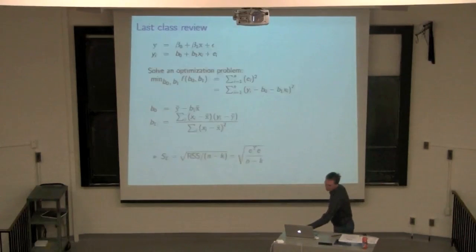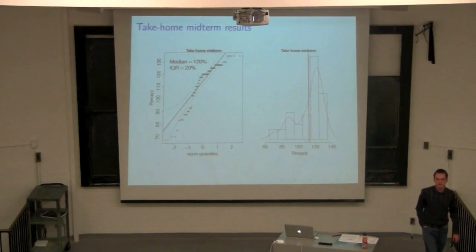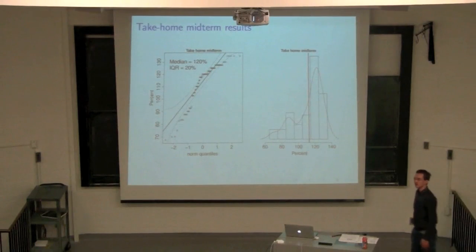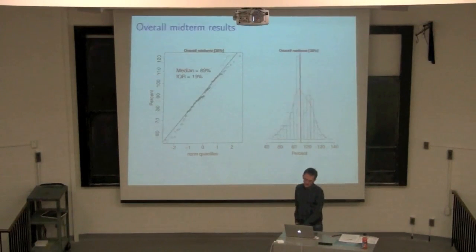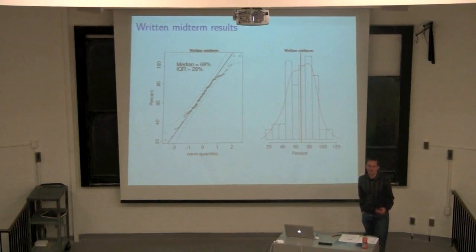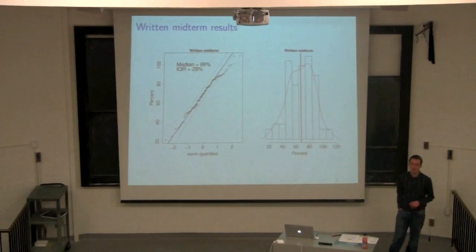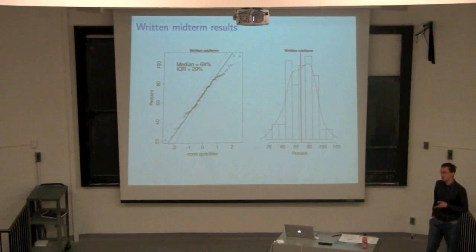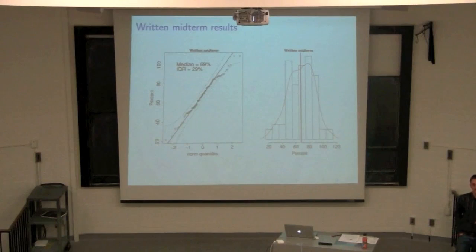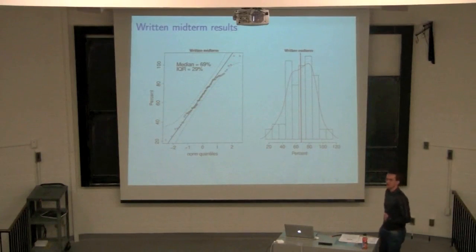On the take-home — those grades were phenomenal. Everyone answered the extra questions, and the average grade is 120%. Most people scored between 100 and 140%. I was really happy with the level of effort. If your written grade is very different from your take-home grade, make sure you understand the concepts, because this is a course where concepts matter more than numbers. A lot of you threw marks away by not answering the 'interpret the result' part, so pay careful attention to the wording of questions.